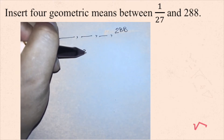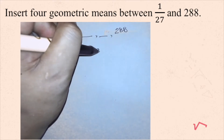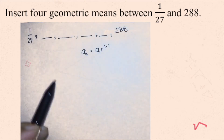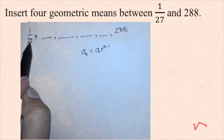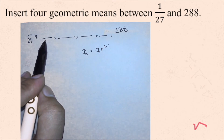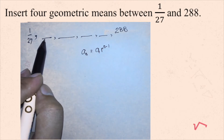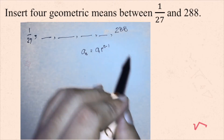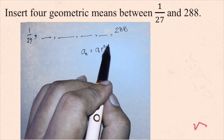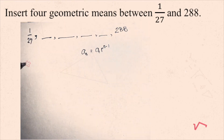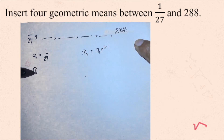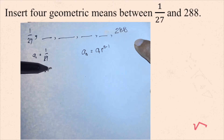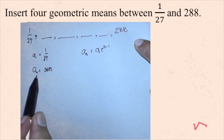The geometric formula is a sub n equals a sub 1 times r raised to n minus 1. We need the common ratio to multiply to 1/27 to get the second term, then multiply r to the second term to get the third term, and so on. Here, a sub 1 is 1/27, and since the last term is given, a sub n is 288.